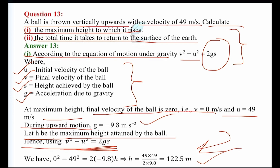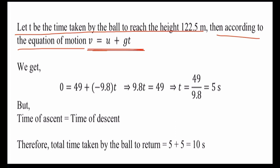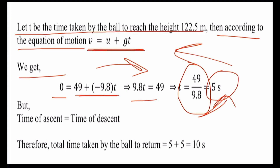For the second part, let T be the time taken by the ball to reach the height of 122.5 meters. Using the equation of motion V equals U plus GT: the final velocity is 0, U is 49, and G is minus 9.8. Solving for T gives a final answer of 5 seconds.